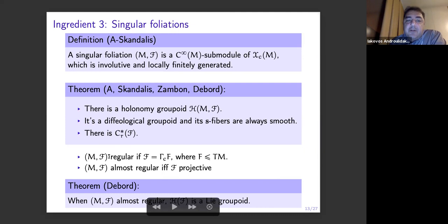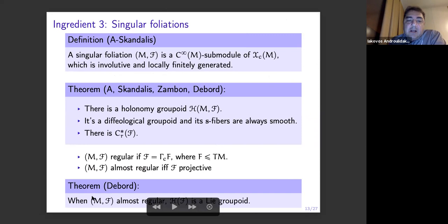What does it mean for the foliation to be regular? It means that the module is locally free — it's the sections of some vector bundle. And what does it mean for the foliation to be almost regular? It means that the module is projective. And Claire was able to prove — she actually did this before our work — that when the foliation is almost regular, then the holonomy groupoid is a Lie groupoid, really a Lie groupoid, in the almost regular case.